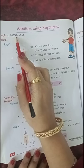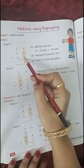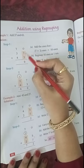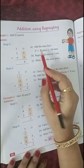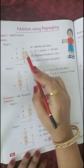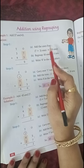Example, add 37 and 43. First we have to, we always do ones column first. Add the ones first. This is the first step of doing.